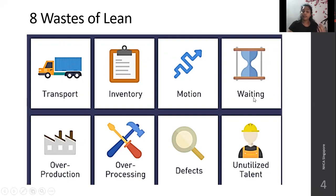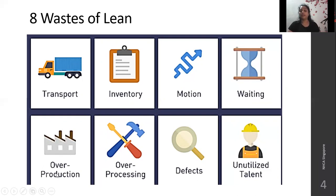Waiting time is a significant patient satisfaction and customer satisfaction issue, especially in consumer-oriented practices. So Lean reduces the waiting time. Overproduction: Lean makes sure that things are not produced unnecessarily. Overprocessing: too many processes in a service or product. Lean ensures that too many unwanted processes are not required.